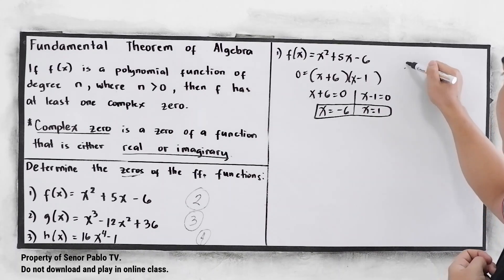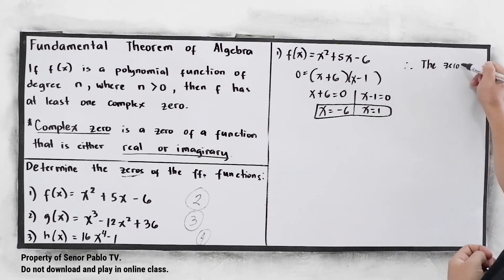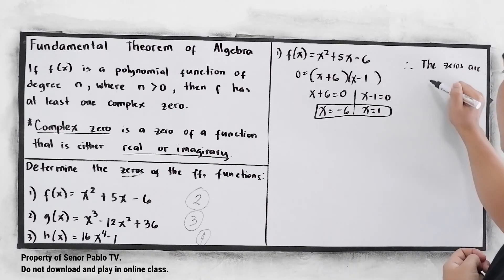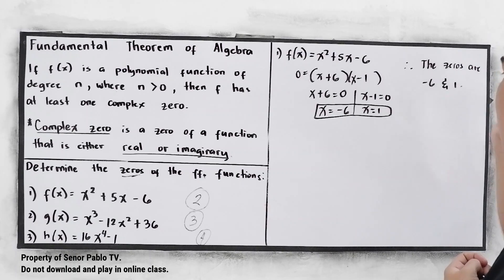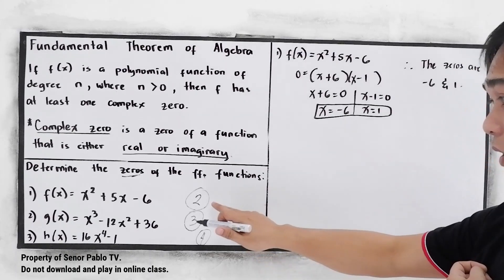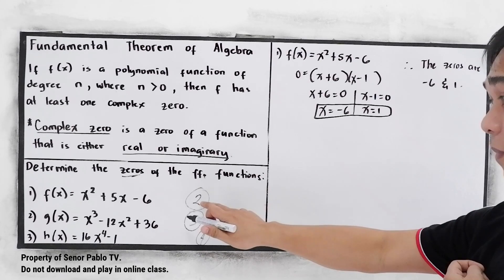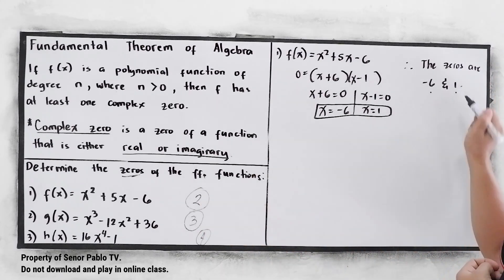Therefore, the zeros are negative 6 and positive 1. So how many zeros are we going to expect? We have 2 — that's 1 and 2.